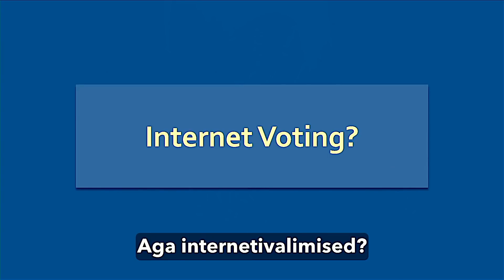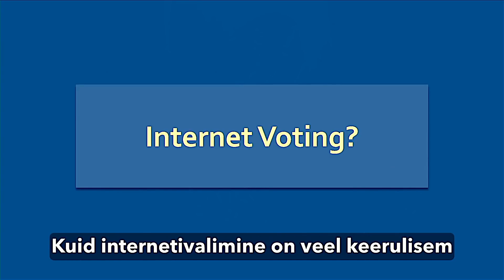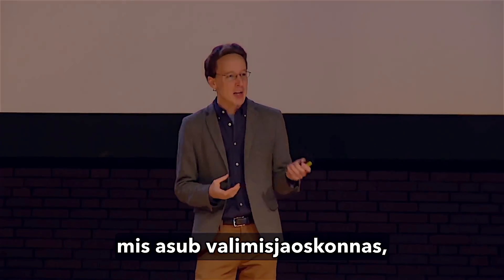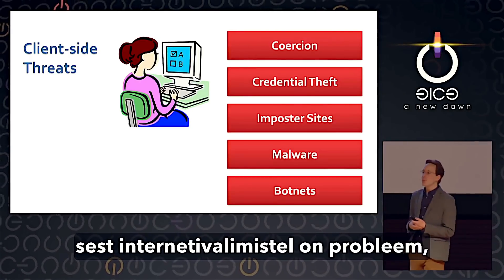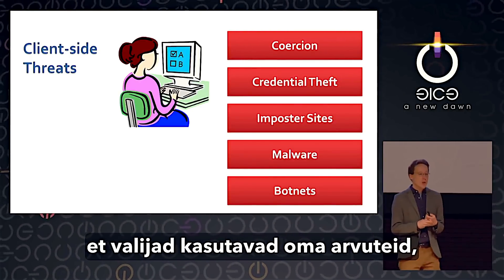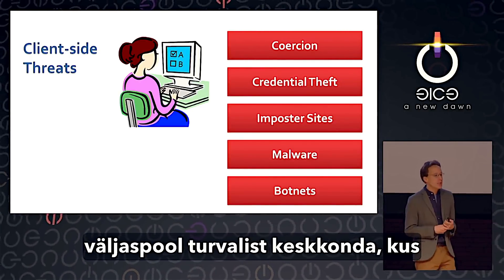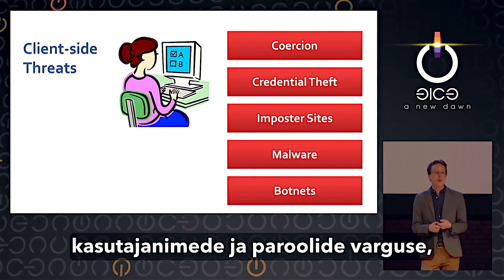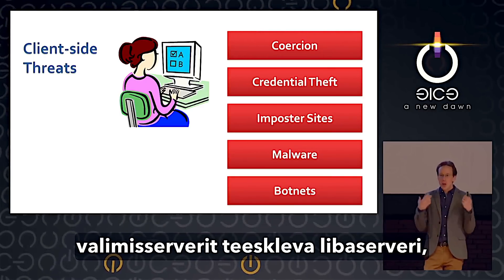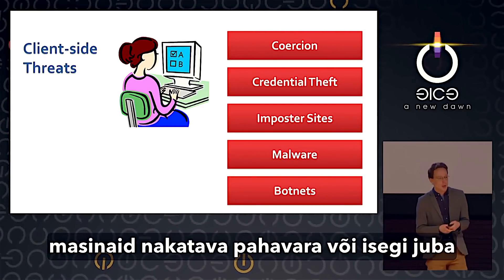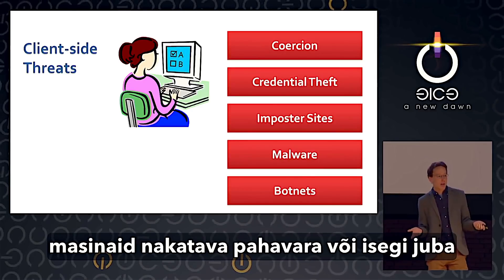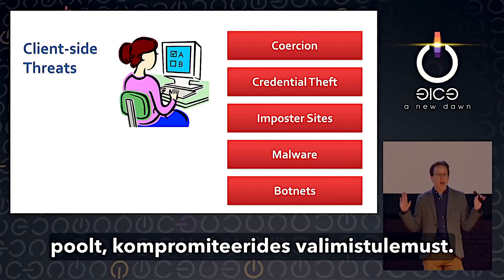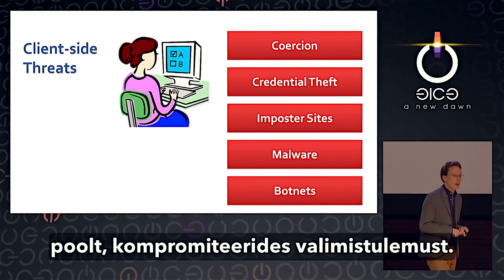Internet voting is even harder than voting on a standalone machine in a polling place, because the voter is using their own machine outside a protected environment where they might be vulnerable to being coerced, to having usernames and passwords stolen, to imposter sites claiming to be the real voting system, to malware on their machines, even to botnets that have already infected large numbers of machines, compromising the election outcome.